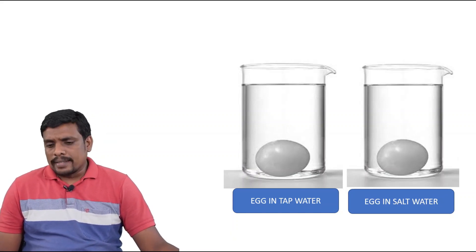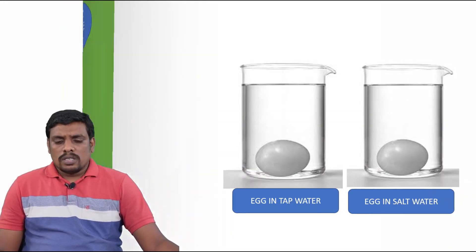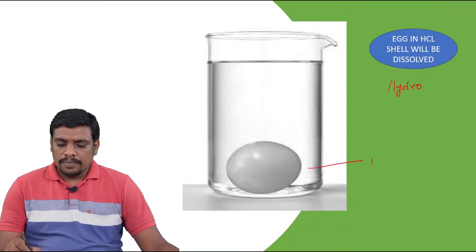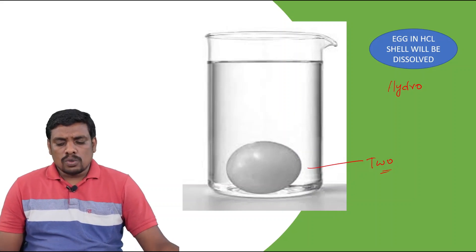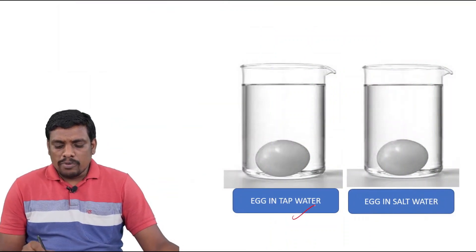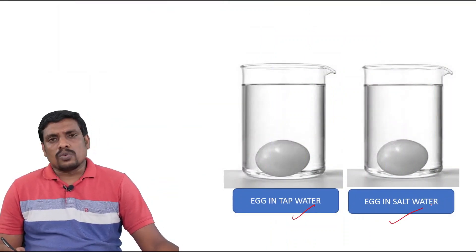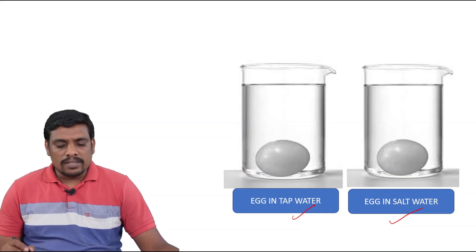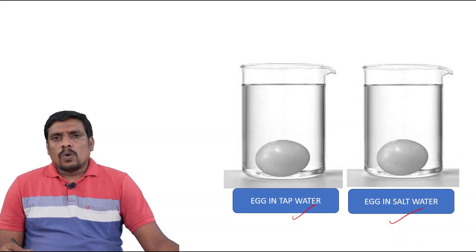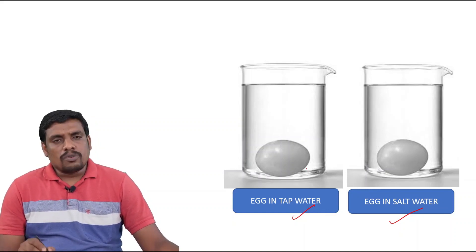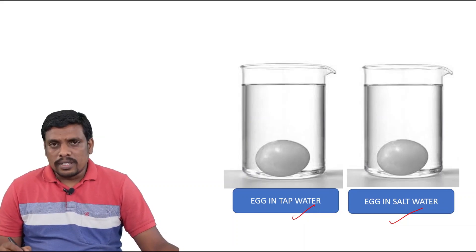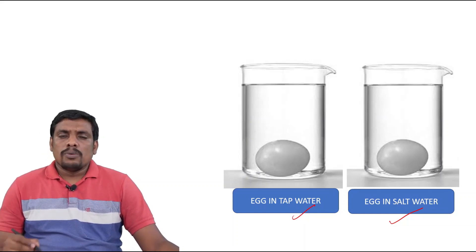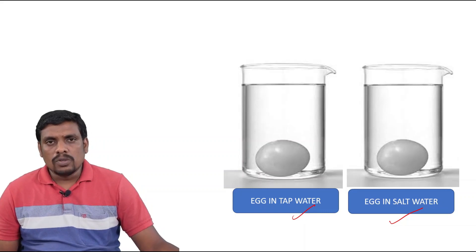Now, take the same eggs. We have to prepare two eggs like this by placing them in the hydrochloric acid — two different eggs. Take one egg in tap water, another egg in salt water. We have to measure their circumference before placing them in their respective solutions.